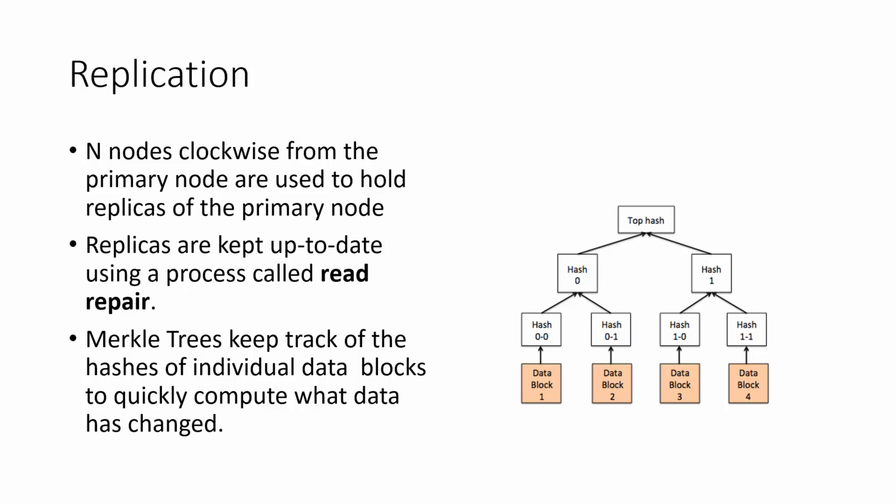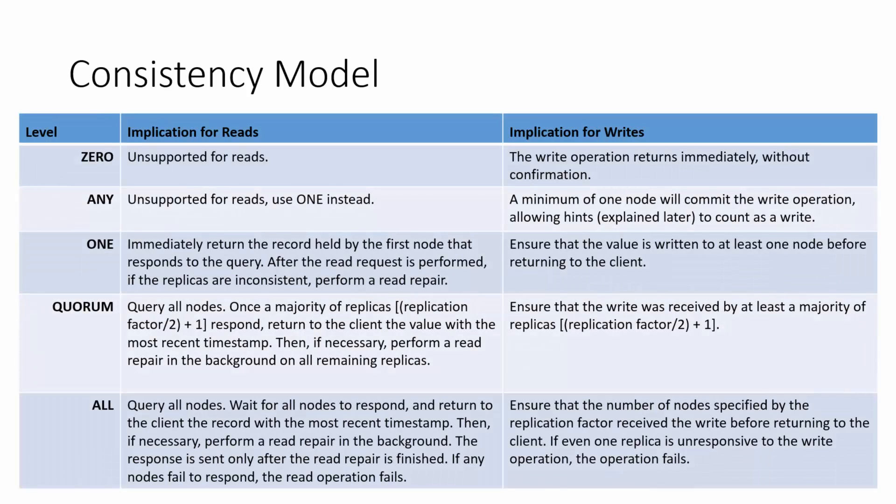Now let's take a look at the consistency model in Cassandra. Cassandra supports a number of consistency models, and these levels are indicated from ZERO to ALL. The level of consistency required is specified per operation, so you can perform a read or write in Cassandra using any of these consistency levels. The consistency level ZERO is actually unsupported for reads because it doesn't make sense to read from zero nodes. However, in a write, specifying level ZERO does not wait for confirmation from the cluster—it will return immediately.